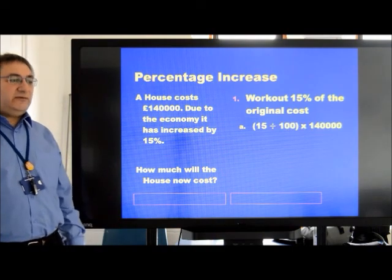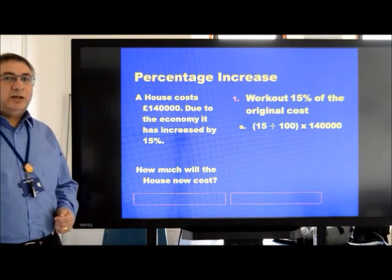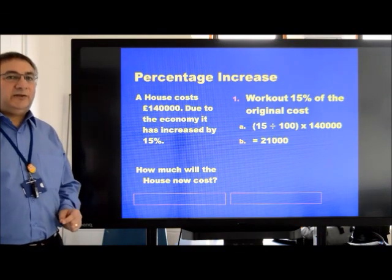So again, work out fifteen percent of the original cost, using the same formula. Fifteen divided by one hundred, multiplied by one hundred and forty thousand, will give us an answer of twenty-one thousand.